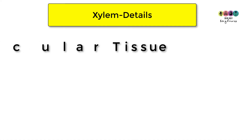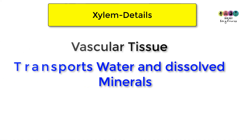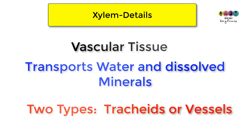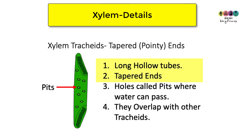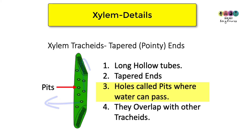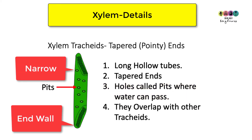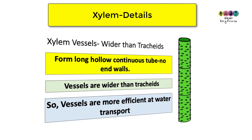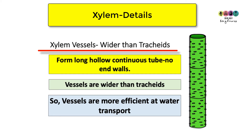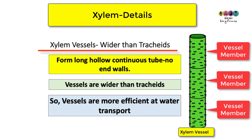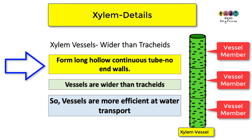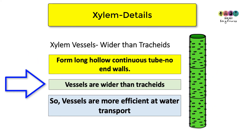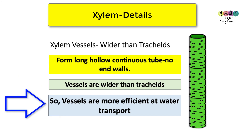Let's look at the detailed structure of xylem — a type of vascular tissue that transports water and dissolved minerals. There are two forms: xylem tracheids and xylem vessels. Tracheids are long hollow tubes with pointed or tapered ends, with holes called pits where water can pass sideways or upwards, and they overlap with other tracheids. They have an end wall and are narrow. Xylem vessels are much wider, forming long hollow continuous tubes with no end walls, making them much more efficient at transporting water than tracheids.